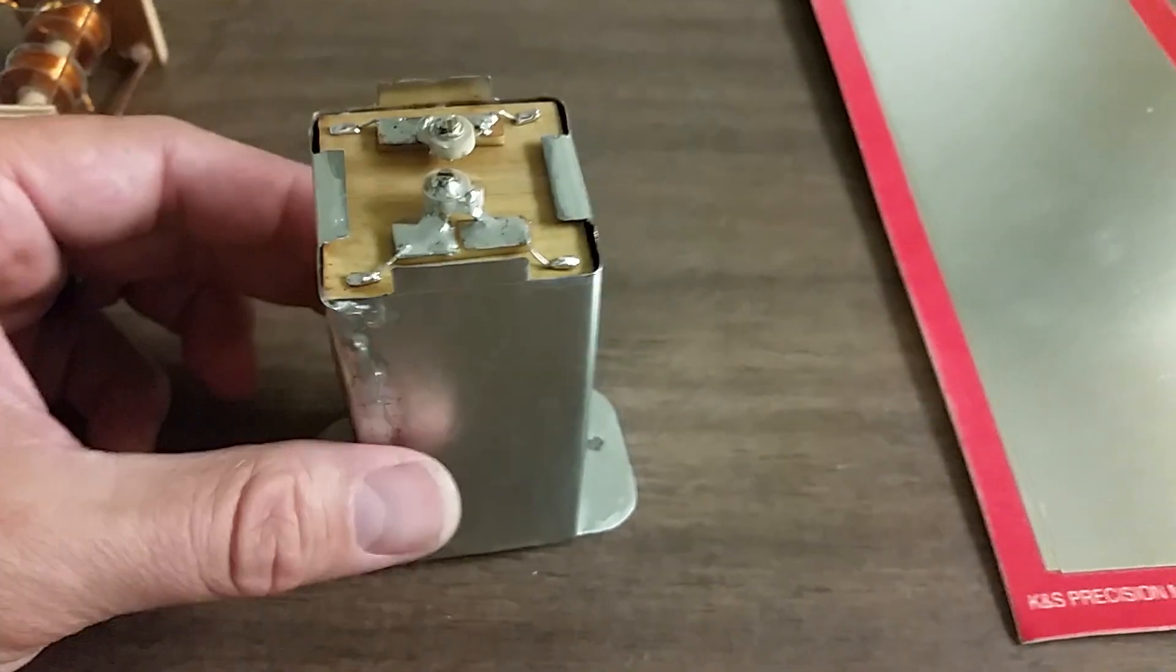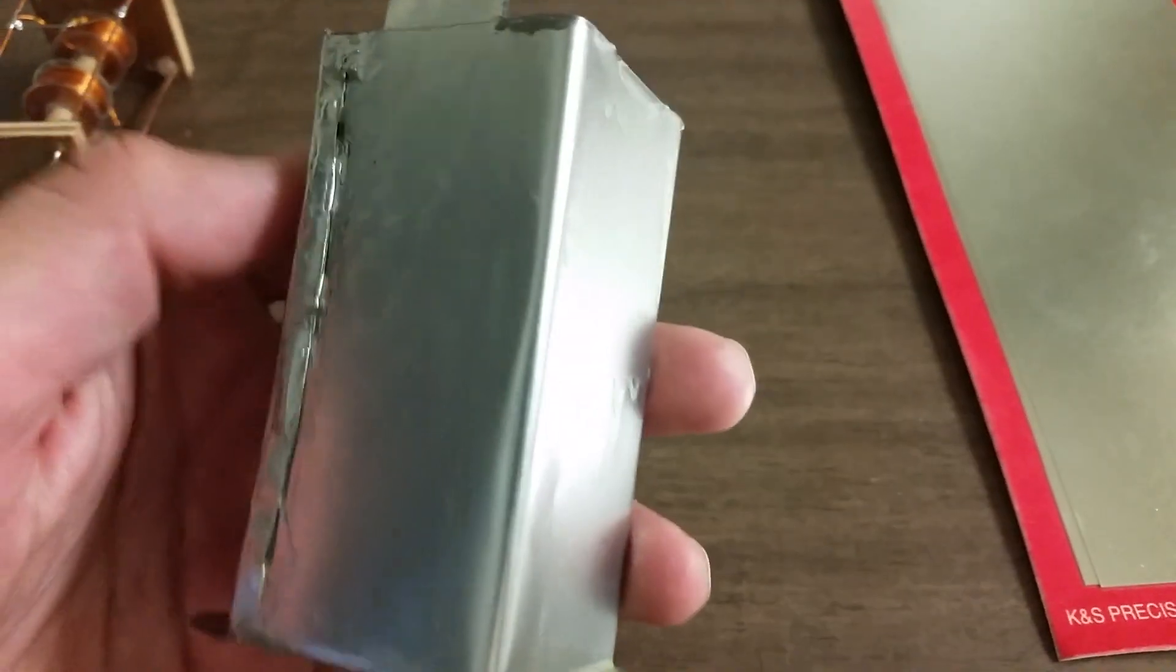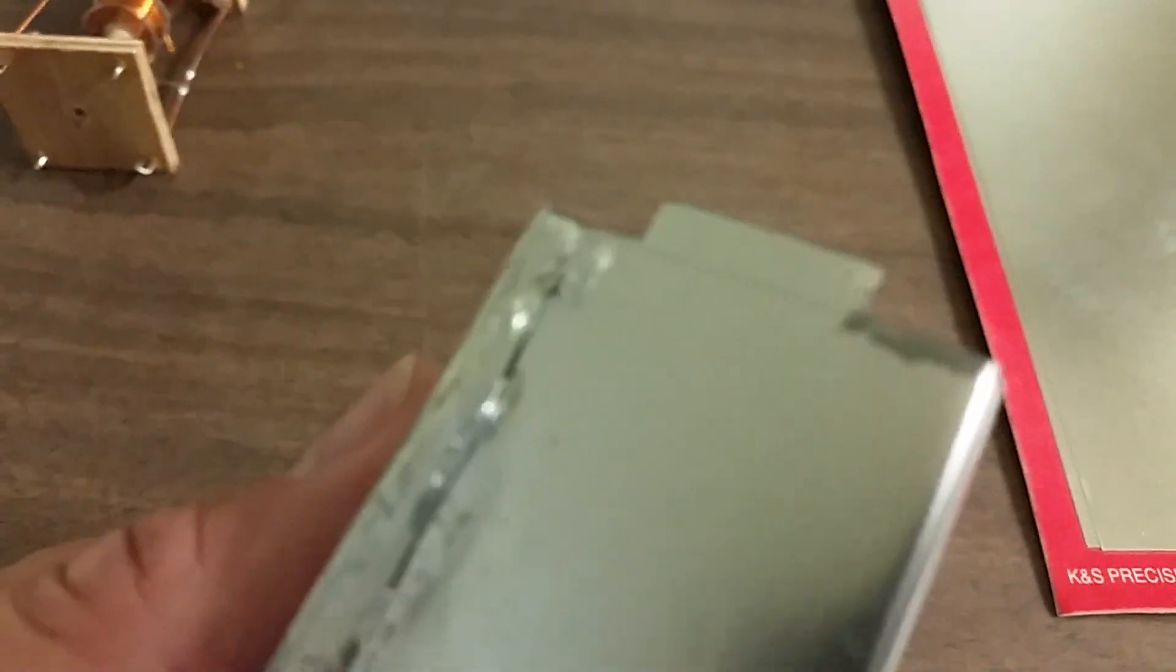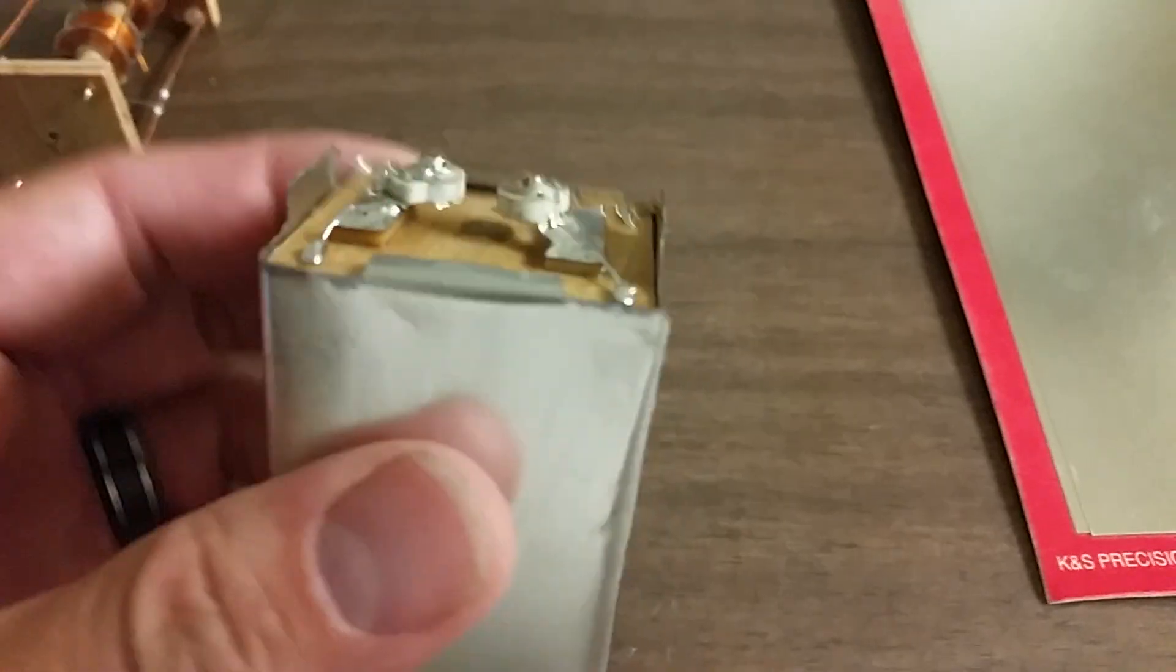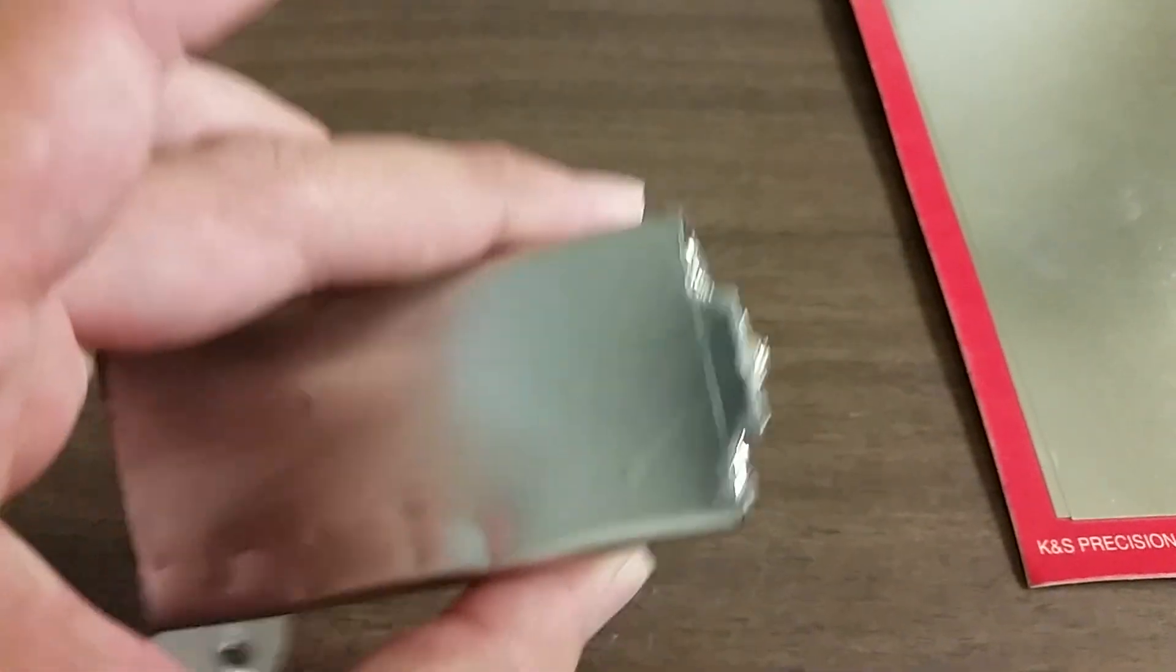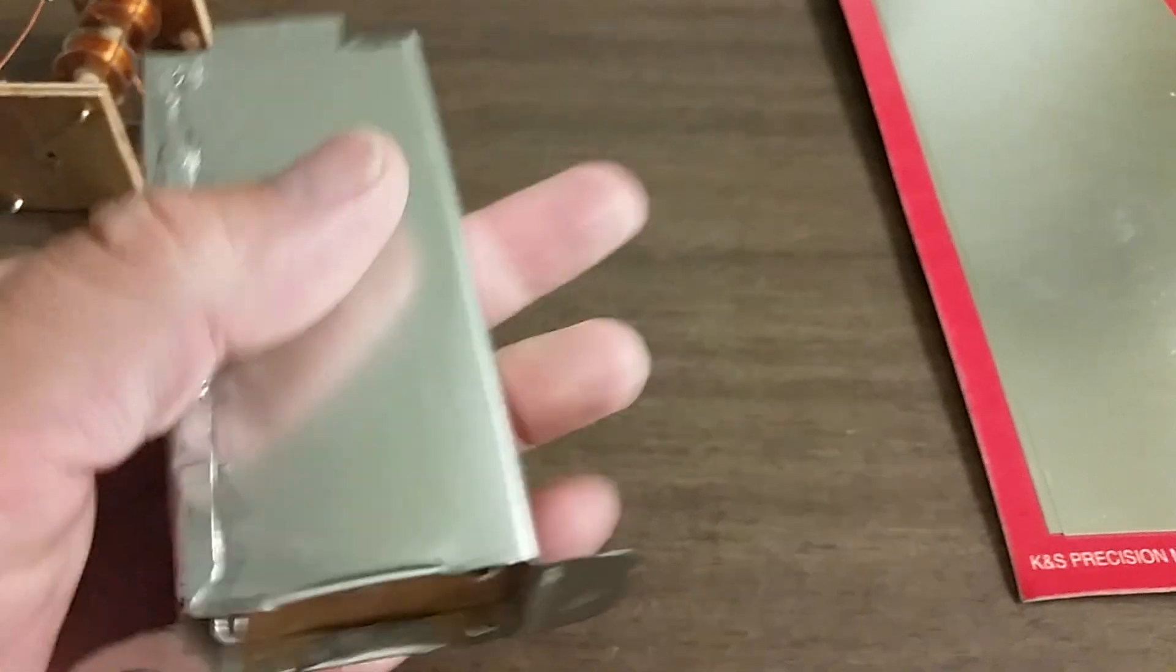This is my completed IF transformer. I made a shield can out of it with some tin that I got from the craft store. The seam right here is not very good but I intend to improve my process with further builds of these IF transformers. This one was just experimental.